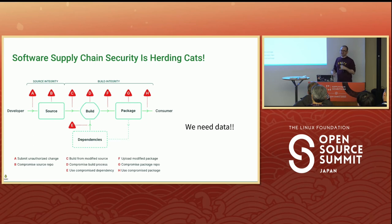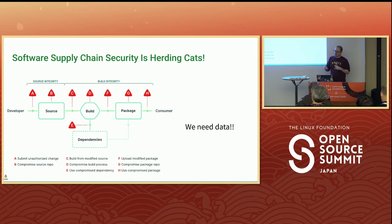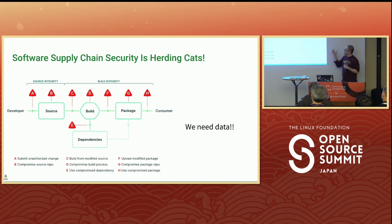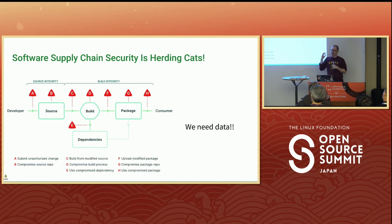This problem happens recursively — it's turtles all the way down. The dependencies you're pulling in also have that same set of issues, and it just keeps going on all the way to the hardware. The way we need to start looking at this is we need data. If you have accurate data, you can begin to think about the problem.